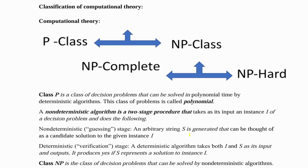Let us look into what P class, NP class, NP complete, and NP hard are. Starting with P class: class P is a decision problem that can be solved in polynomial time by deterministic algorithms. Deterministic algorithms means you can determine the solution from these particular algorithms. This class of problems is called the polynomial class of problems.